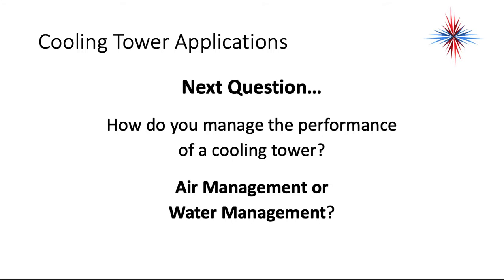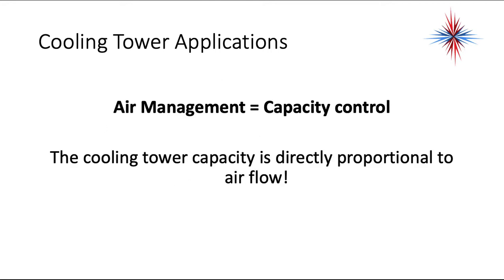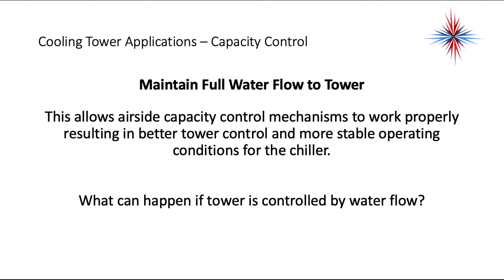So how do we manage the performance of a cooling tower — do we use air management or water management? Both are possible. Air management equals capacity control; the cooling tower capacity is directly proportional to air flow — more air flow, more capacity. The other way is to maintain full water flow to the tower, which allows air-side capacity control mechanisms to work properly, resulting in better tower control and more stable operating conditions for the chillers.